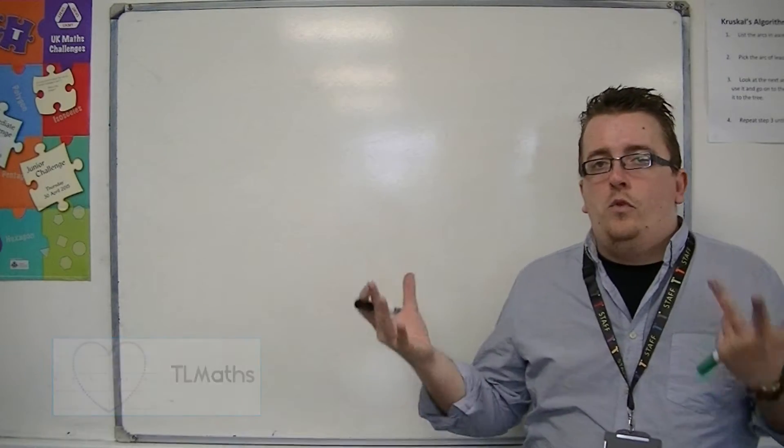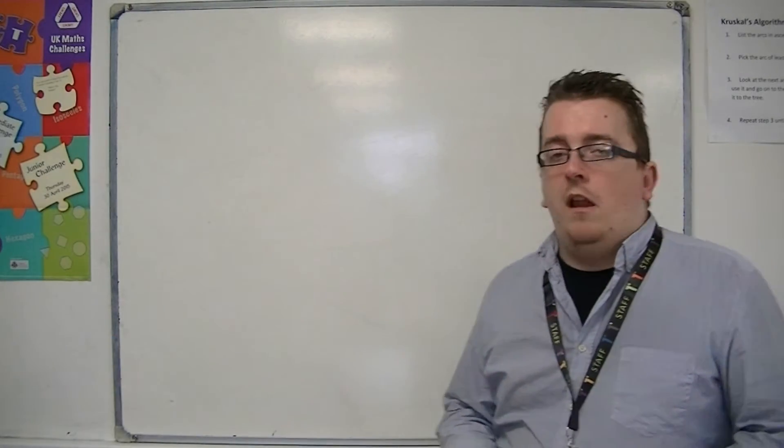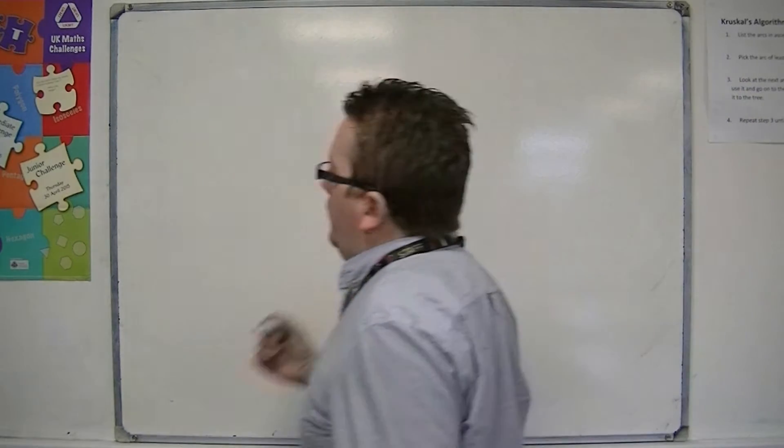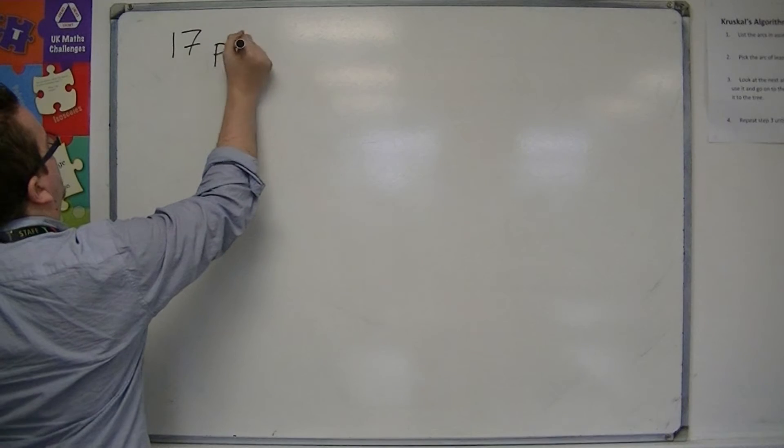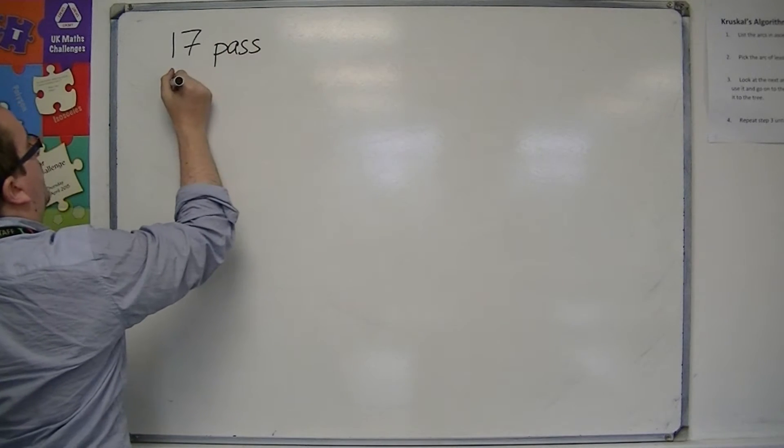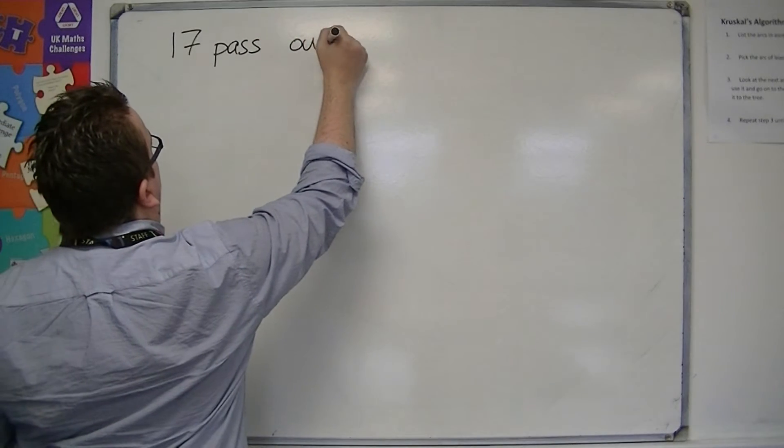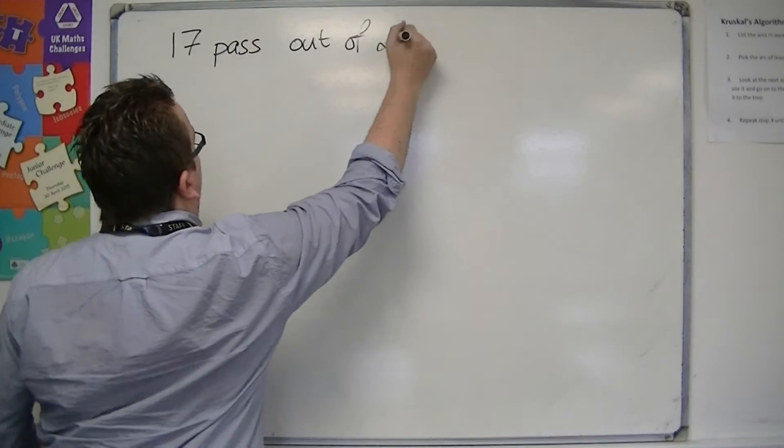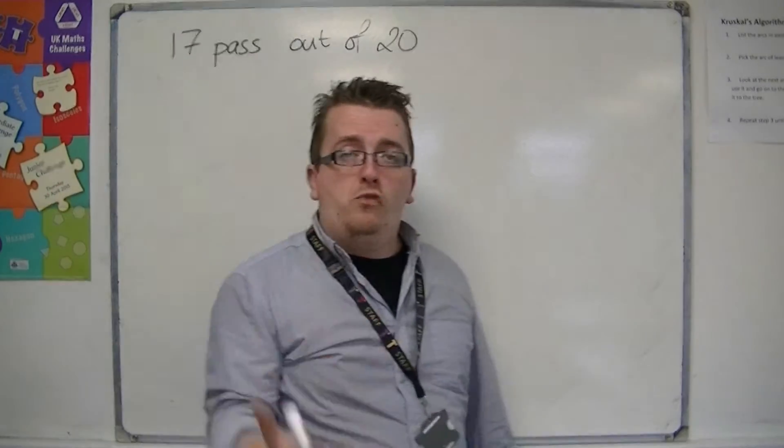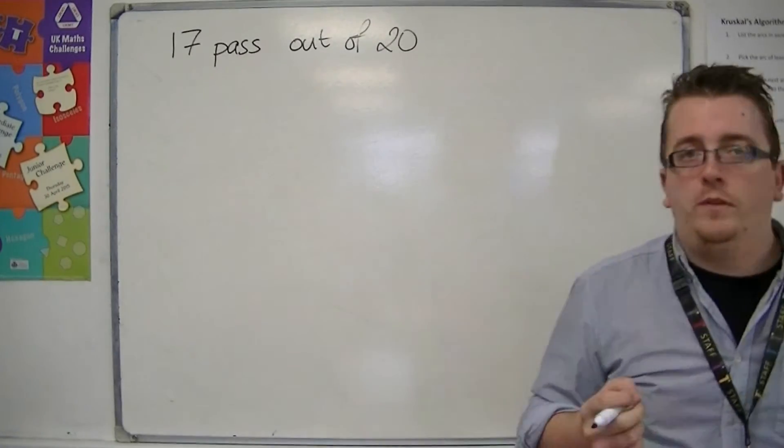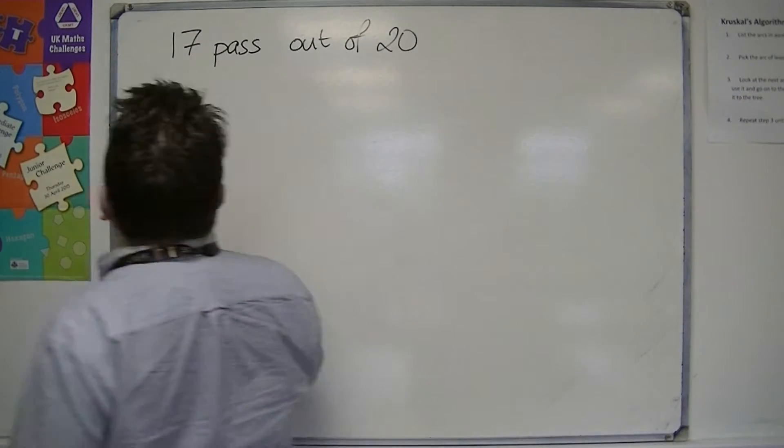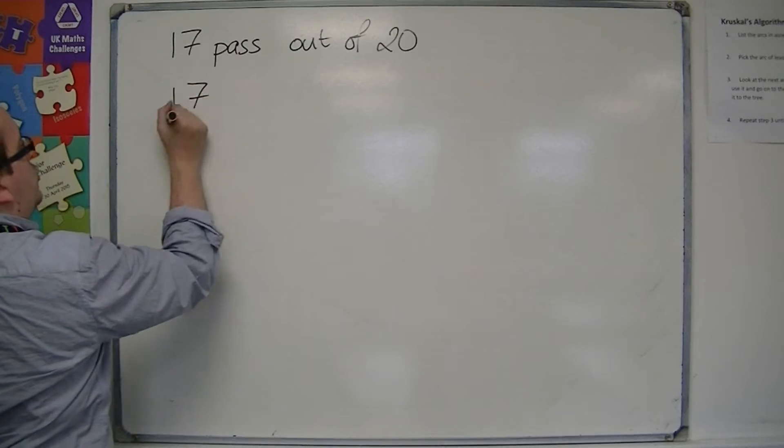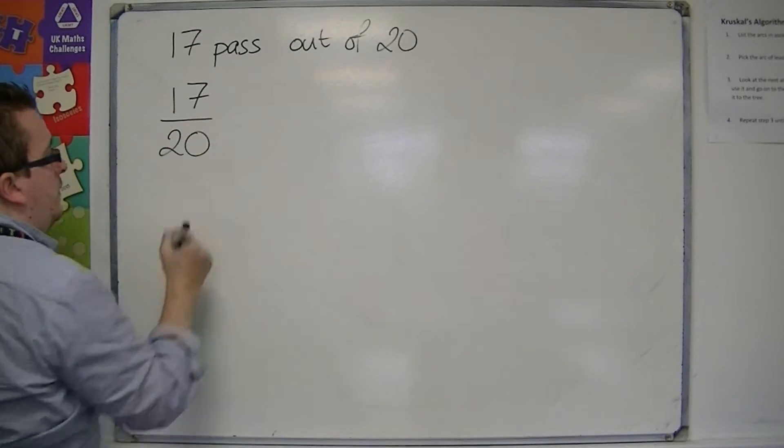Let's say we set a test for a class and 17 of them passed the test out of a possible 20. Now we want to be able to write that as a percentage. So 17 out of 20 as a fraction is like that.